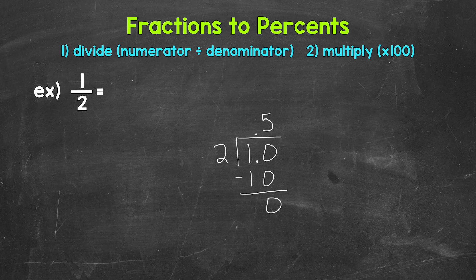One half equals five tenths. Now we need to convert this decimal to a percent by multiplying it by 100. And again, we can do this by moving the decimal twice to the right. So let's rewrite five tenths off to the side here and move the decimal once, twice to the right.